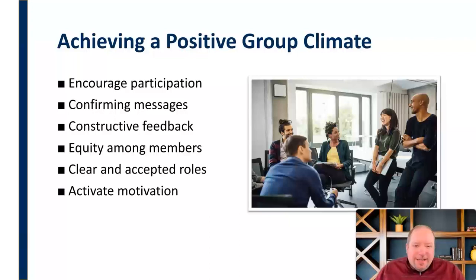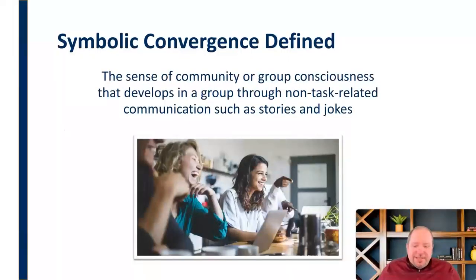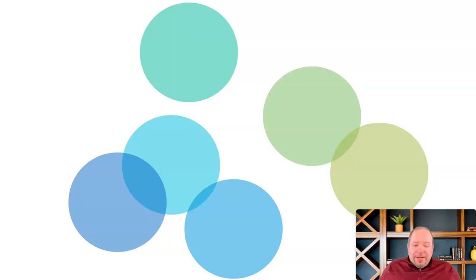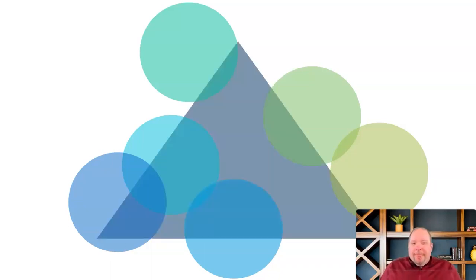One of the things we see in positive groups — and a byproduct as well as a tool to create positive groups — is what we call symbolic convergence. Symbolic convergence is the sense of community or group consciousness that develops in a group through non-task-related communication, such as stories or jokes. When you have these shared experiences, shared stories, and inside jokes, it creates this sense of symbolic convergence. Something happens and you have that shared experience, that shared joke, that creates a common bond and touches everybody in that group, creating cohesion and enhancing the cohesion among the group.